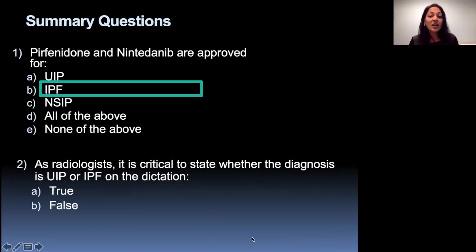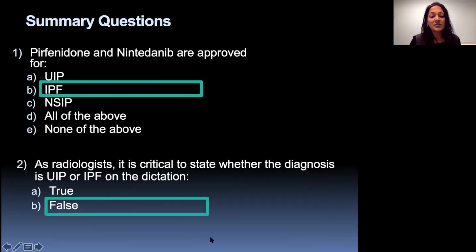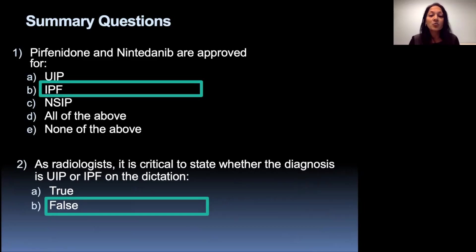As radiologists, it's critical to state whether the diagnosis is UIP or IPF on the dictation — true or false? The answer is false. As radiologists, we're not taking a clinical history, so we don't know whether these findings are idiopathic or not. We're only stating whether the diagnosis is UIP and which category of UIP it falls into.